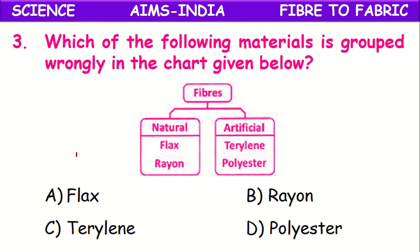Next: which of the following materials is grouped wrongly in the chart given below? A chart classifies fibers into natural and artificial fibers with examples. Flax is correctly placed under natural fibers. However, rayon is not a natural fiber — it is an artificial or man-made fiber — but it is placed under natural fibers, so it is wrongly placed. Terylene and polyester are also artificial fibers.